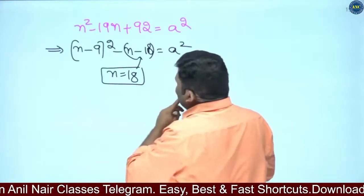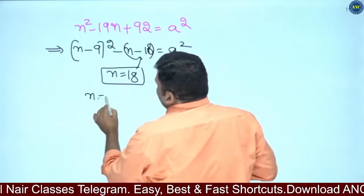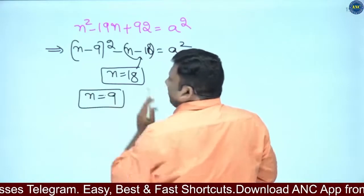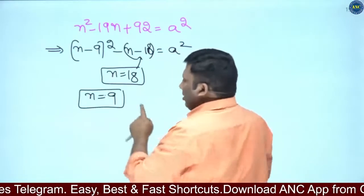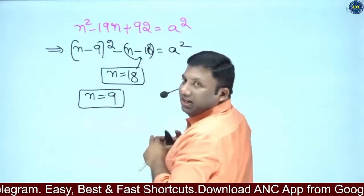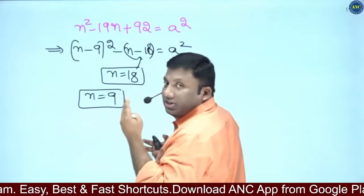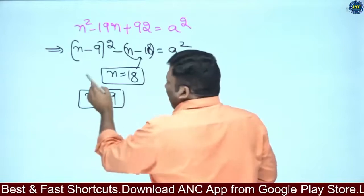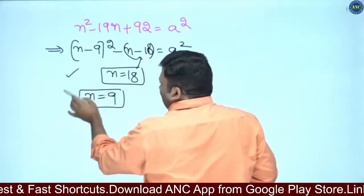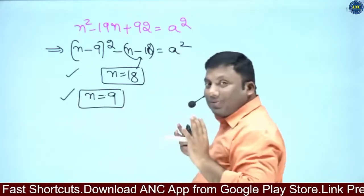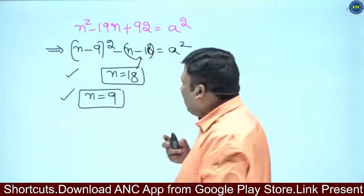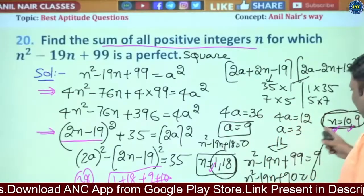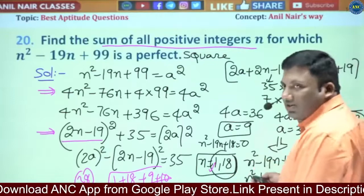If I take N value 9: 9 minus 9 is 0 squared. Then 9 minus 18 is minus 9. Minus into plus gives plus 9. A squared is 9, so A value is 3. So these two cases work. The idea is clear — N value 9 and N value 18 are the two cases we got from this approach.